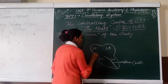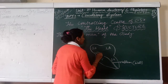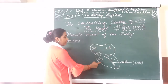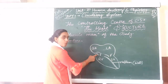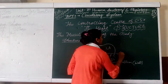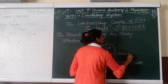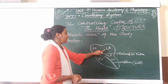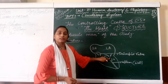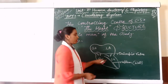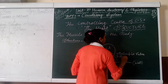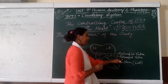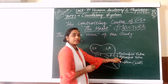Next we will draw the walls of the heart. In between the right atrium and ventricle, this wall is named as the tricuspid wall. In between the left atrium and ventricle, this wall is named as the bicuspid wall. There is another name for the bicuspid wall — it is also said to be the mitral wall.